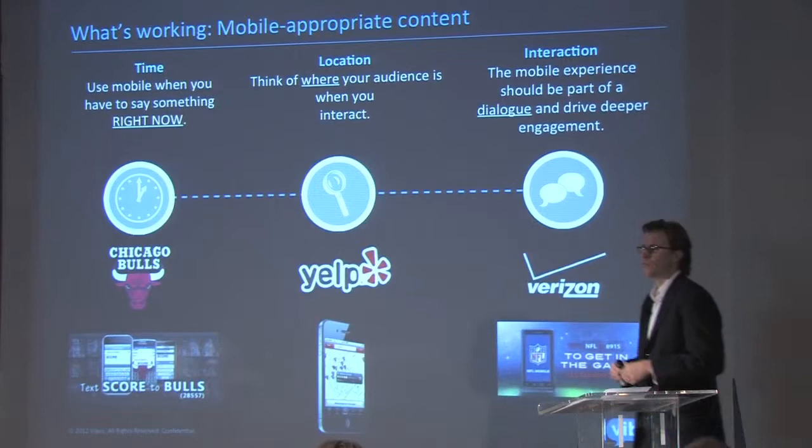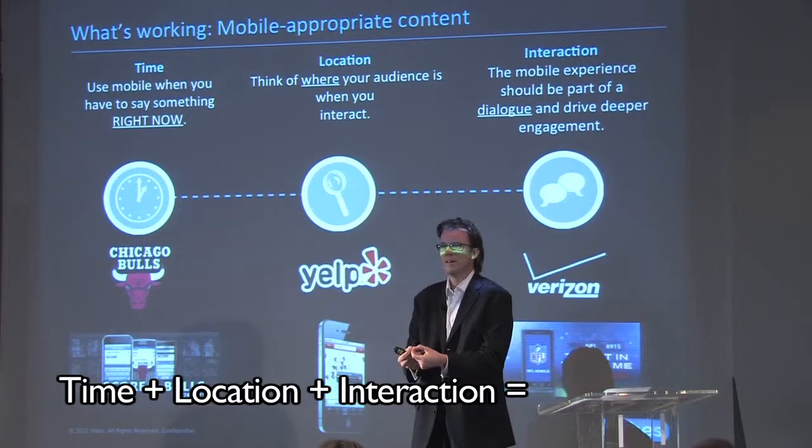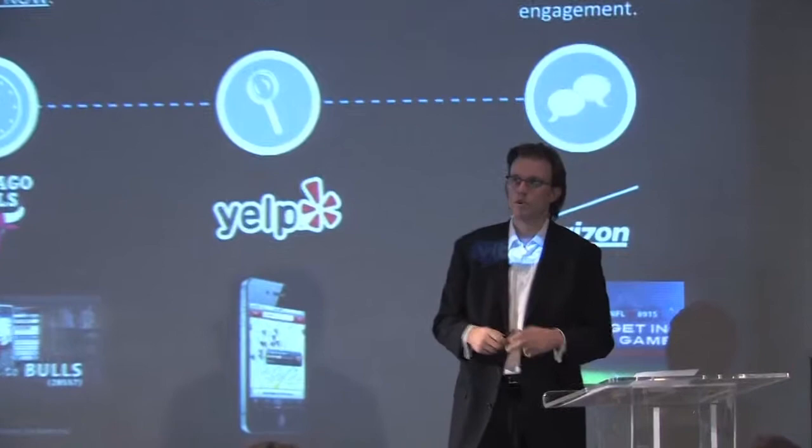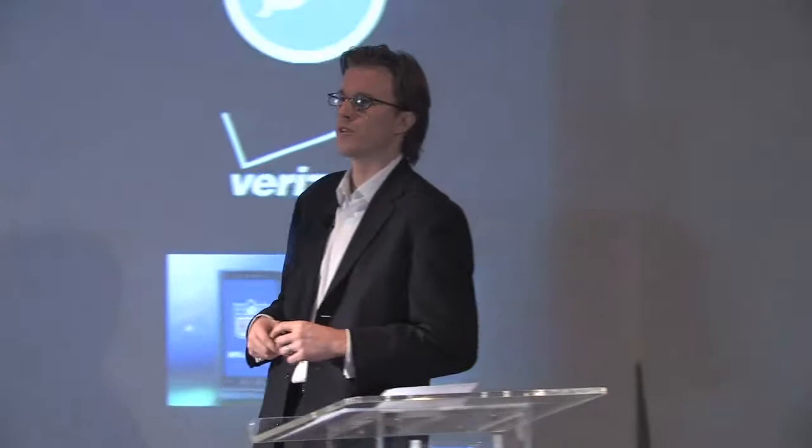I talked a little bit about time, location, and interaction. Mobile is really unique in that when you have the combination of these three aspects, that's what makes mobile unique. I often say if something's better sent via email — if it doesn't involve time, location, and interaction — then it may be better sent by email. Mobile should be reserved for what's really important. And that's a discipline that's hard for most marketers to teach themselves — to hold back.